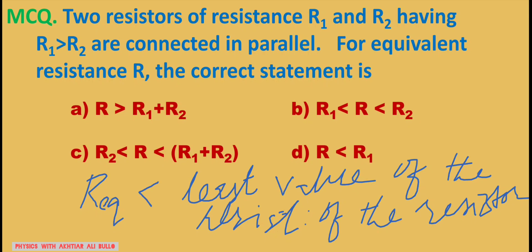So, the correct option is D: R is less than R1.